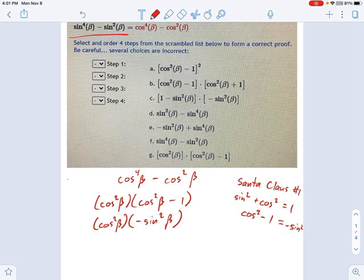I take a look at what I'm trying to do. I want to get this in the form of sine to the fourth minus sine squared, and I think, oh well, maybe if I got rid of all the cosines that would help. So let's use another Santa Claus identity and make this factor on the left one minus sine squared beta.